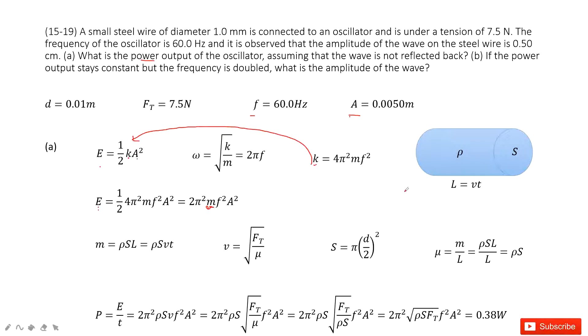Use the density times the volume. So density ρ times the volume S, cross-sectional area, times the length L.